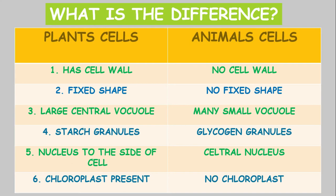Plant cells usually have a very large central vacuole. Plant cells also have starch granules stored in the cell, while in the animal cell that starch would have been stored as glycogen granules.